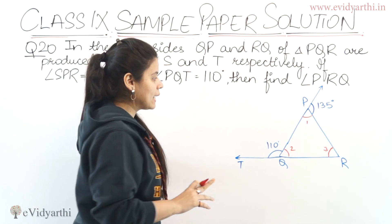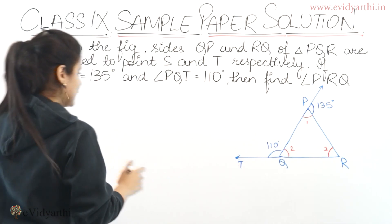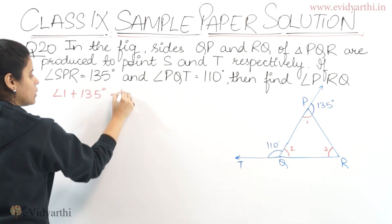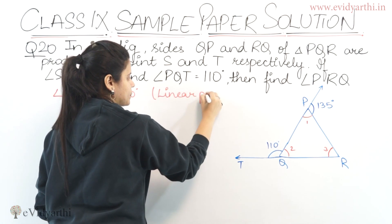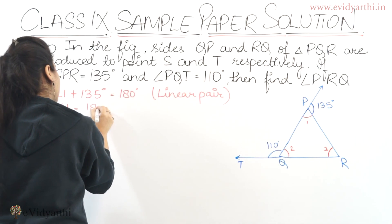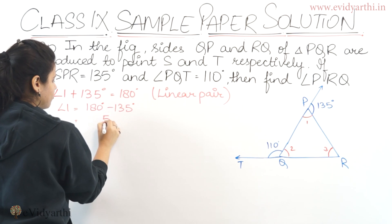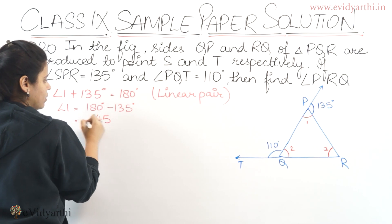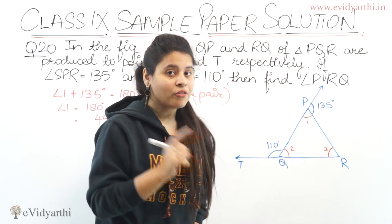To solve this question, you can see angle 1 and angle 2. Angle 1 plus 135 degrees will be equal to 180 degrees because they form a linear pair. So angle 1 equals 180 degrees minus 135 degrees. This will be 45 degrees. So angle 1 is 45 degrees.